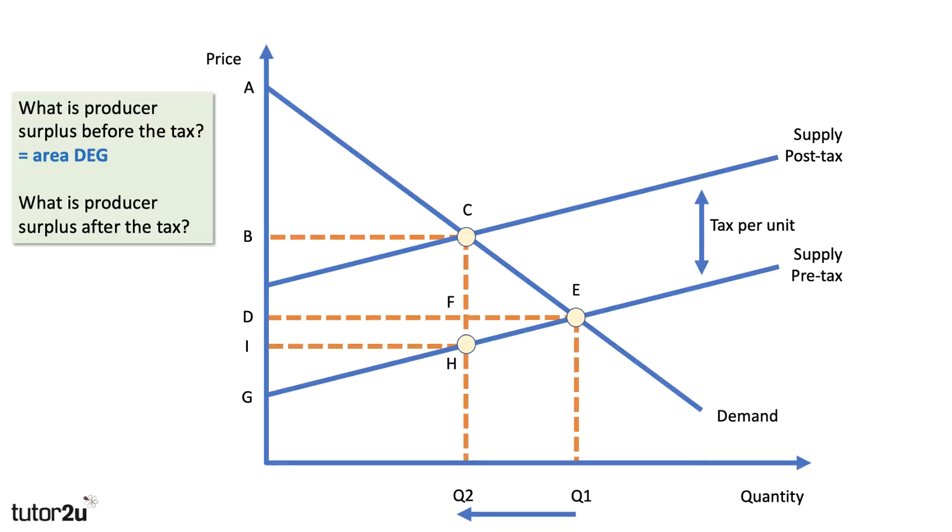Next question for you, what is producer surplus after the tax? After the tax. What do you think? Well, there's some confusion in class when I did this. People thought that the producer got B and it was B, C, H, G. But of course, no, the producer only keeps price I after the tax.